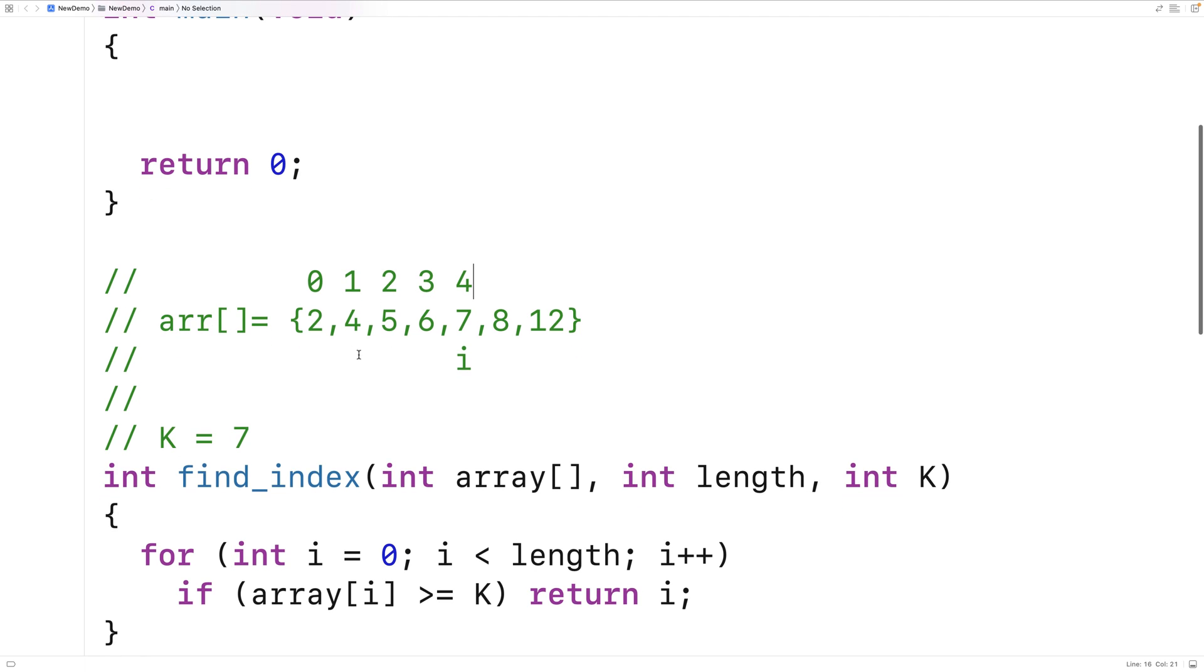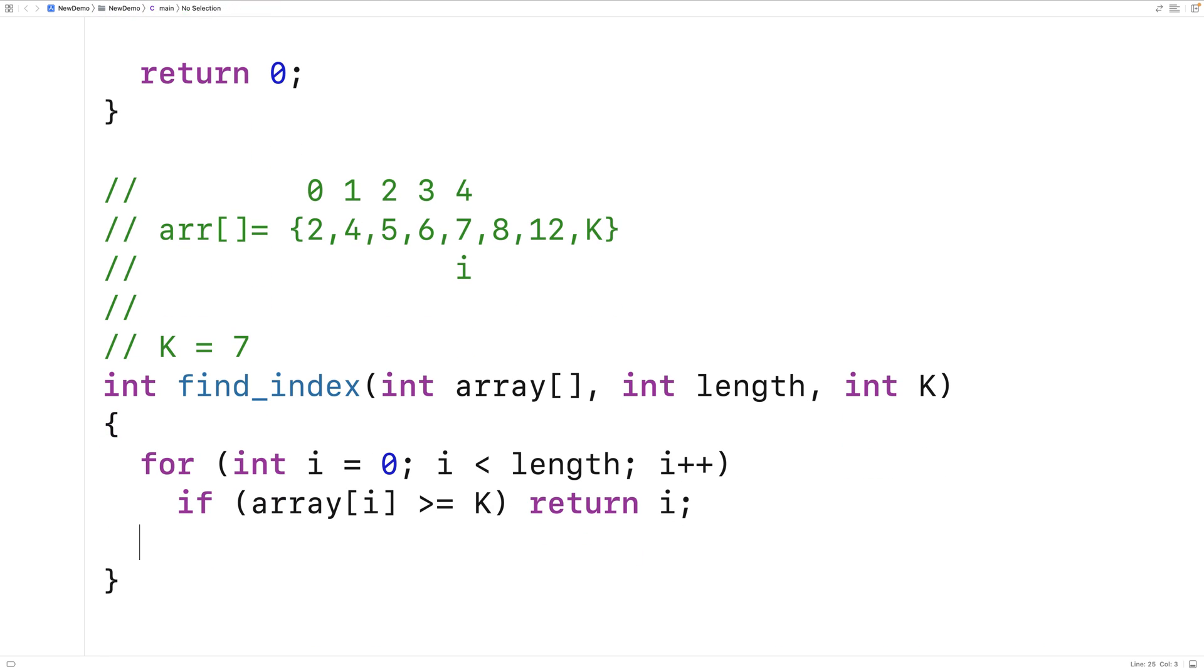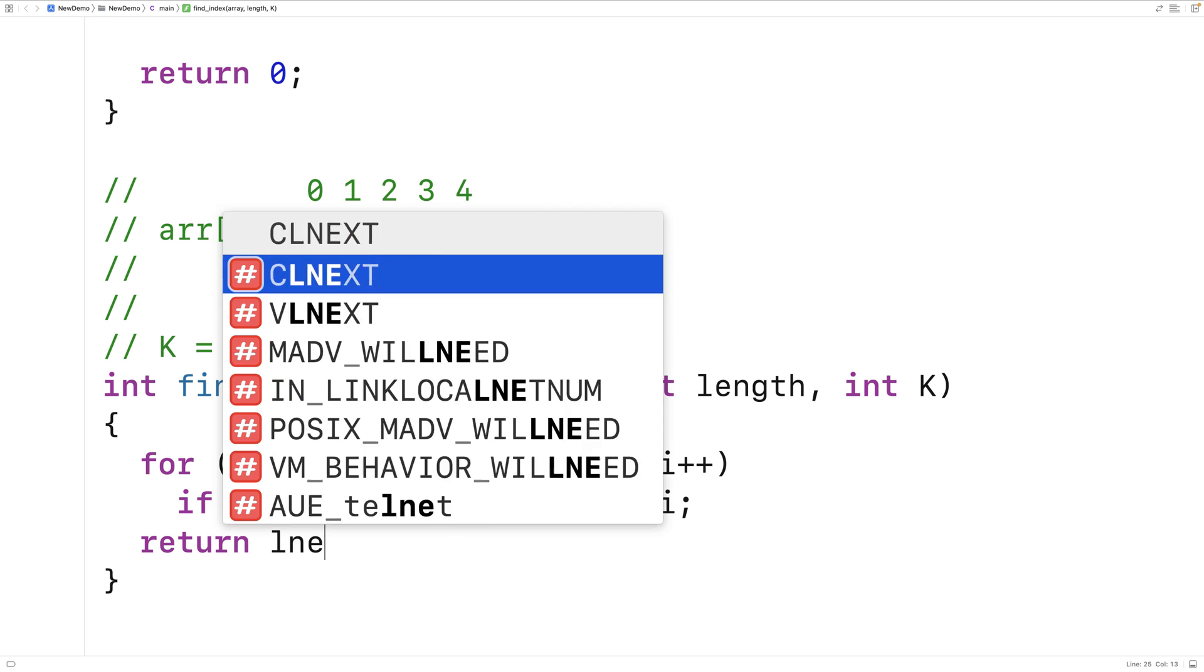Now, in the case that we get through the entire array and none of the elements were greater than or equal to K, if that's the case, we know to return the length of the array. Because we know the element K has to be put onto the end of the array at that point. So at this point here, if we get through the loop, we're just going to return the length.